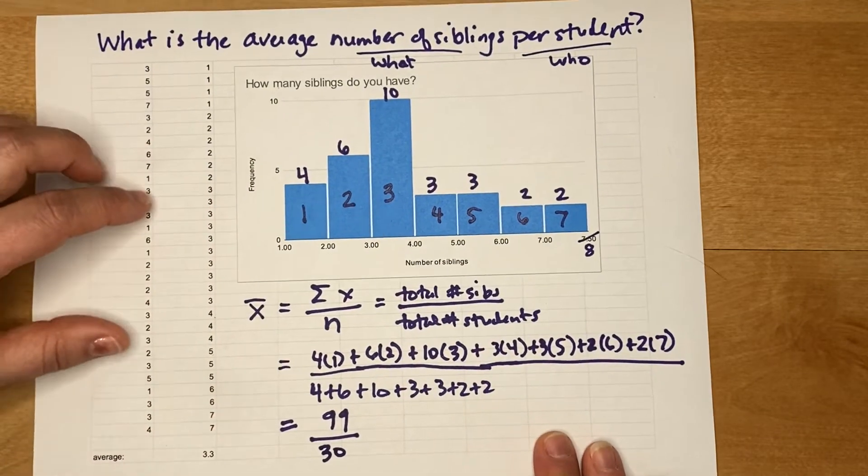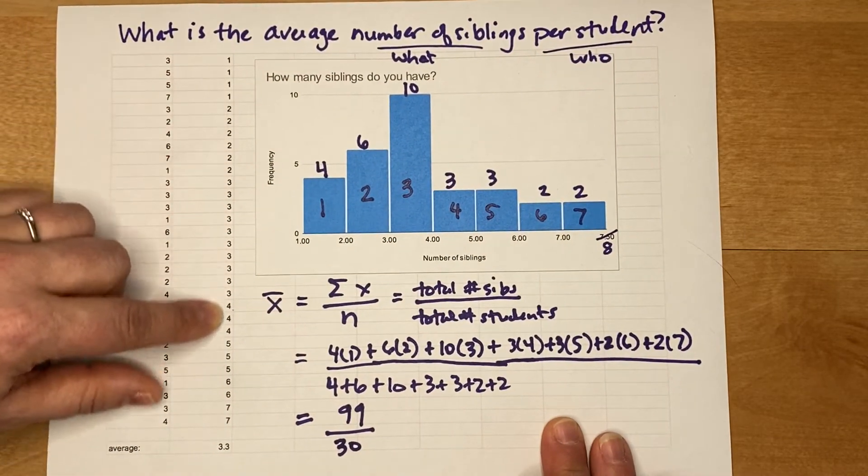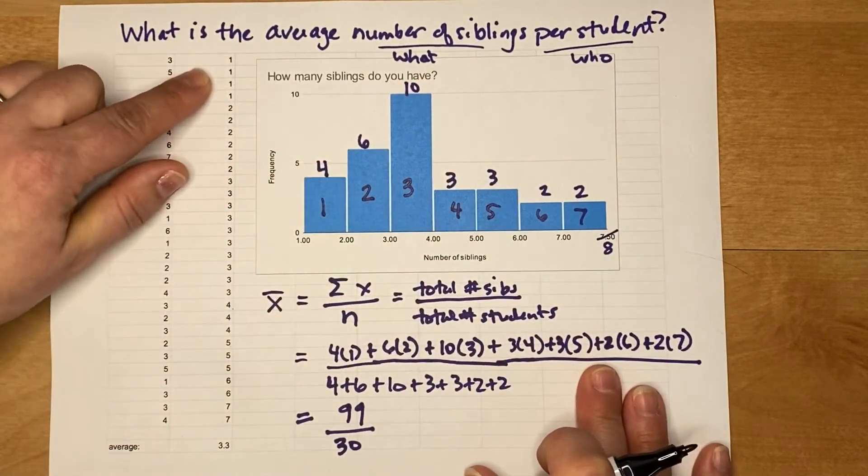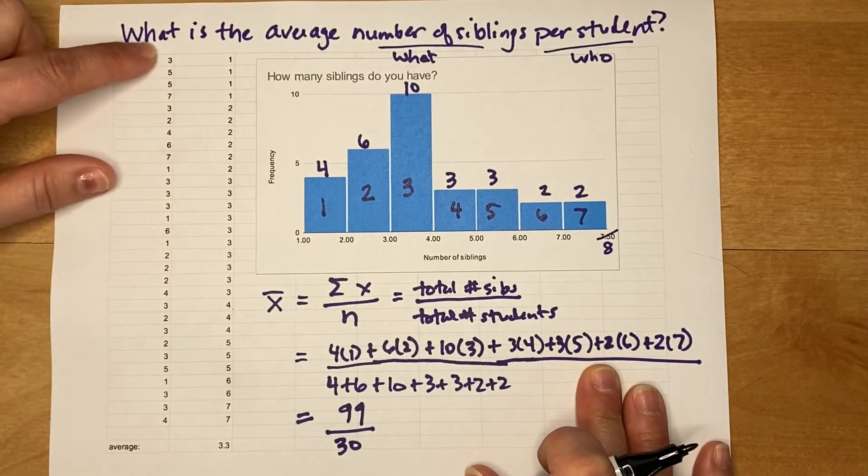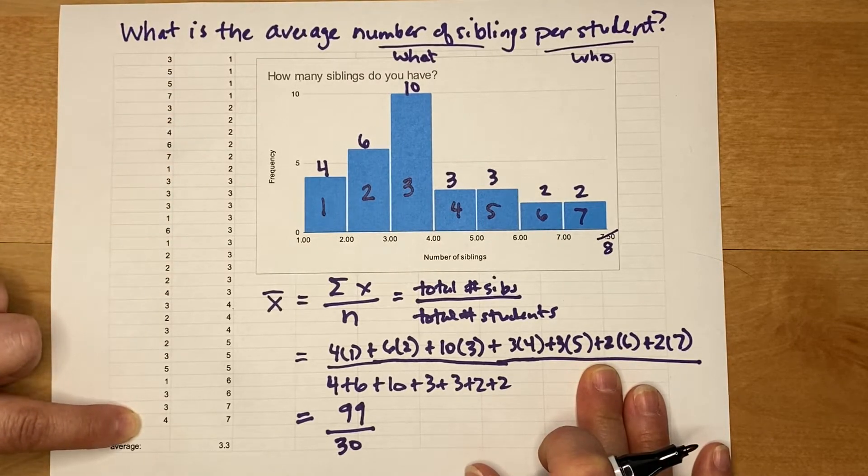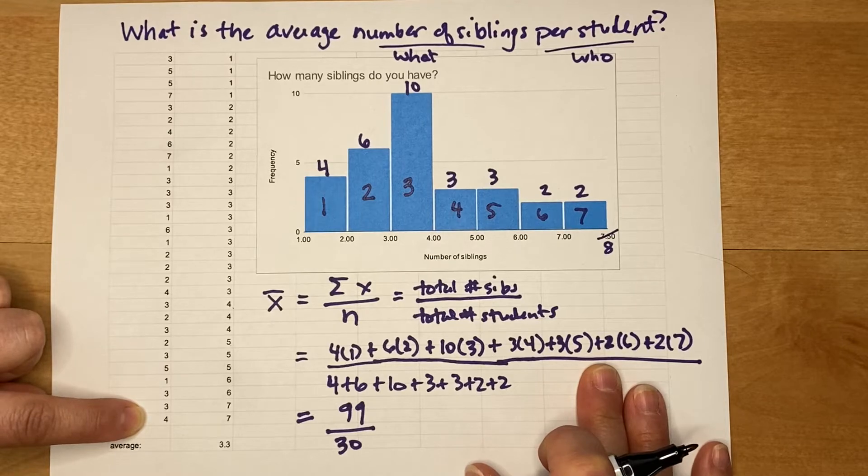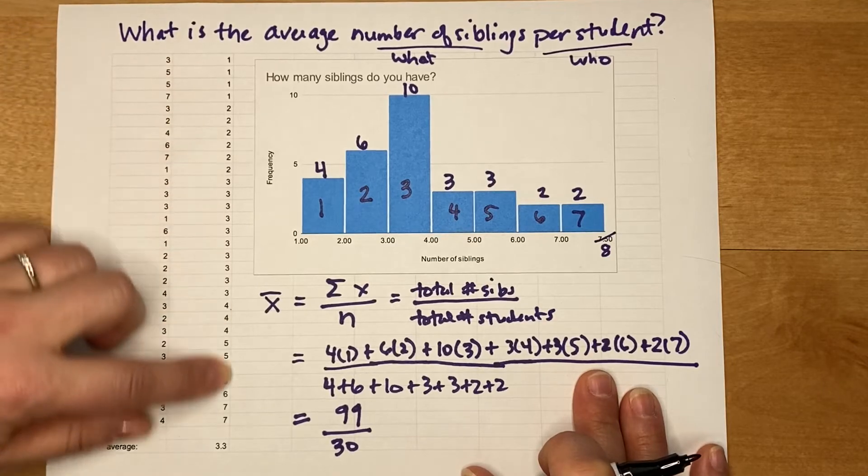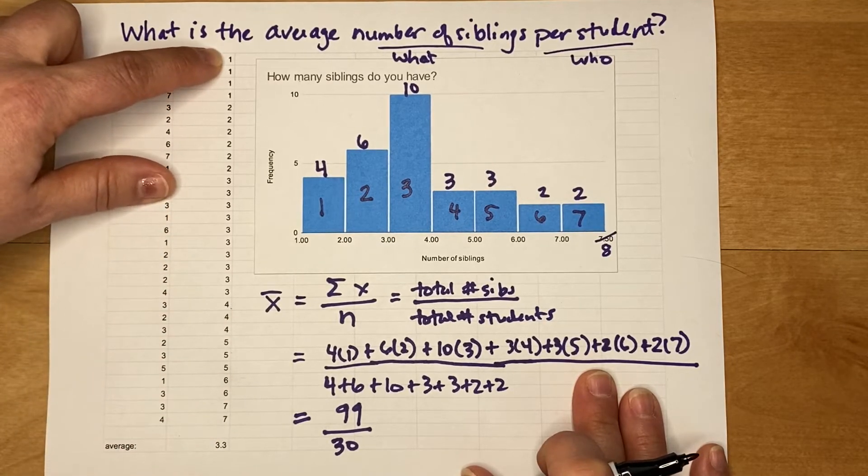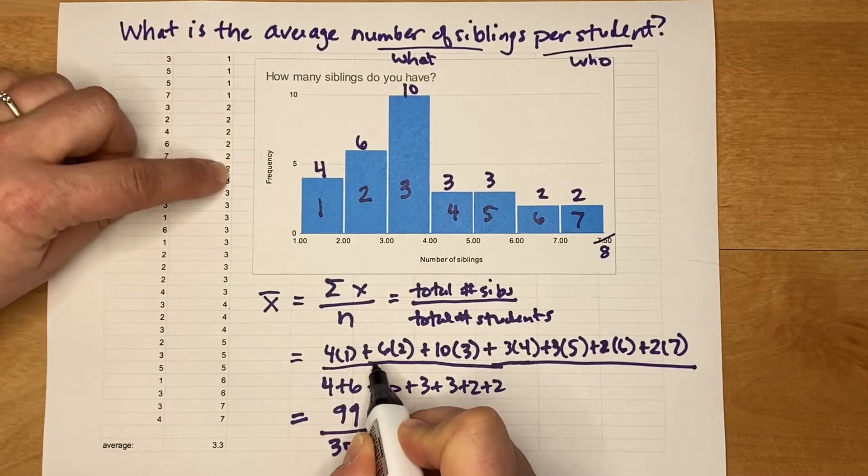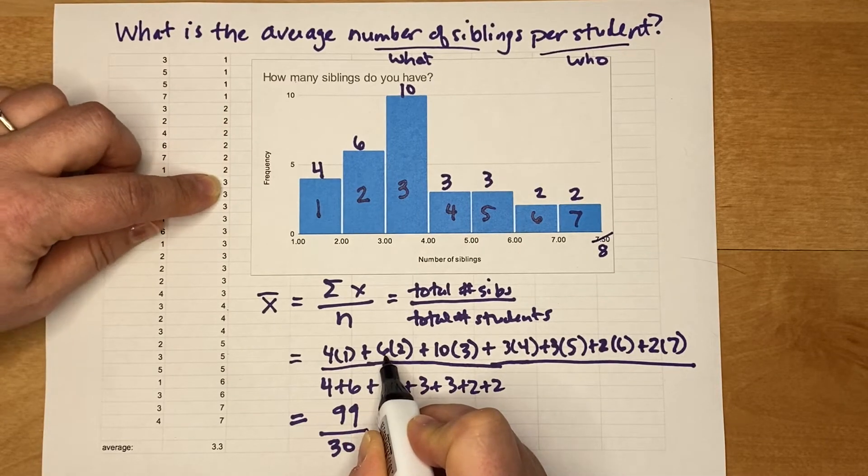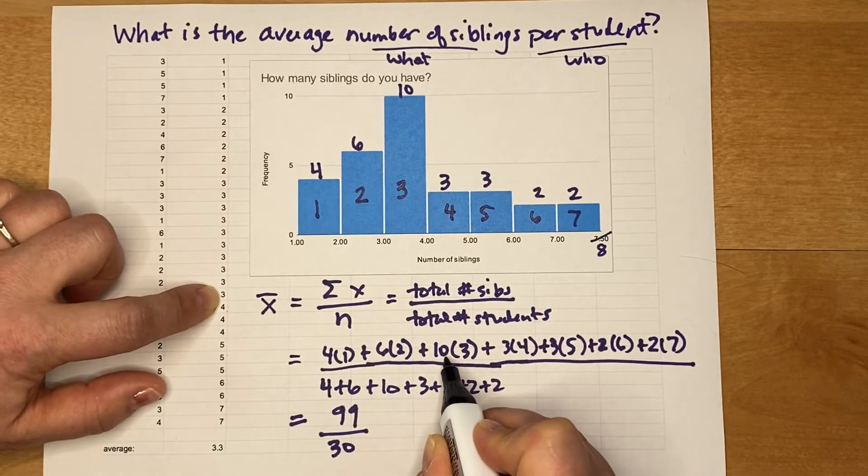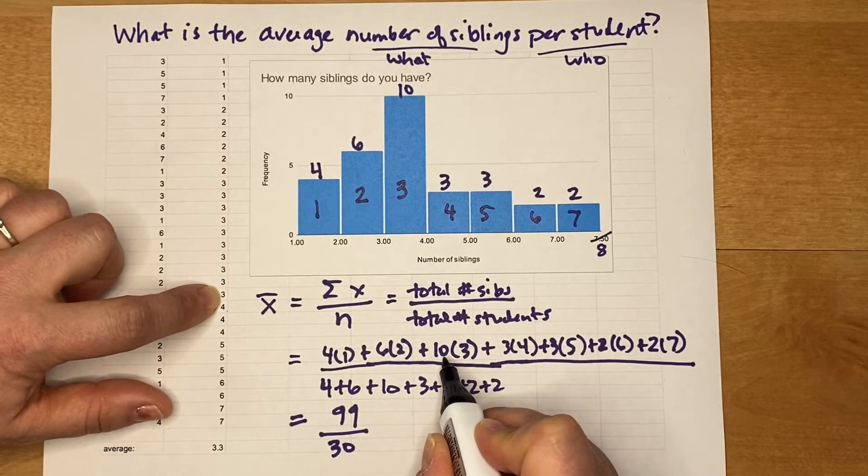Now I can kind of double check that because this was my original data. You wouldn't have this if this was the question, but to confirm that what we're doing is right, we could look at the rows and say yeah, there are 30 rows, so we have a sample size of 30 students. And then when I look at my organized data I can see that a 1 is repeated 4 times, a 2 is repeated 6 times, a 3 is repeated 10 times. So these first numbers or coefficients are the weights of the actual number of siblings.